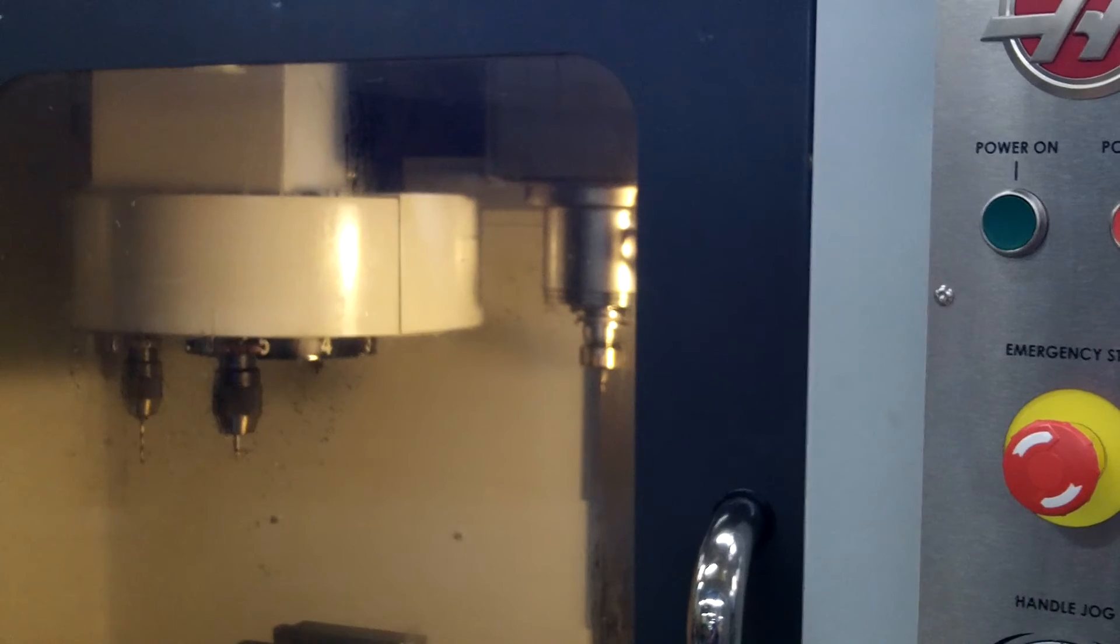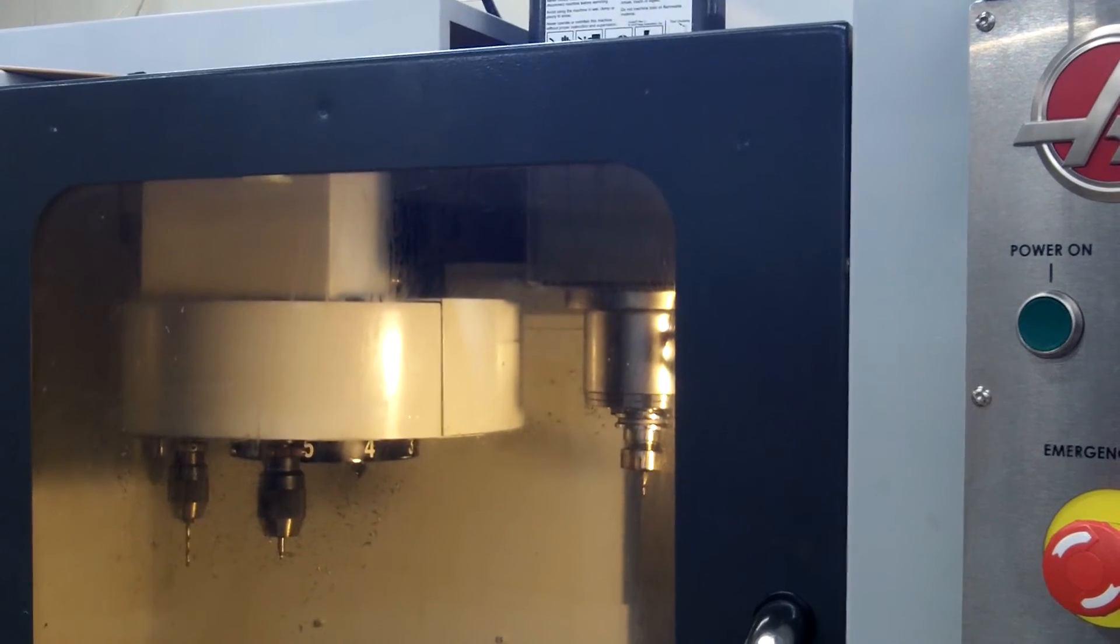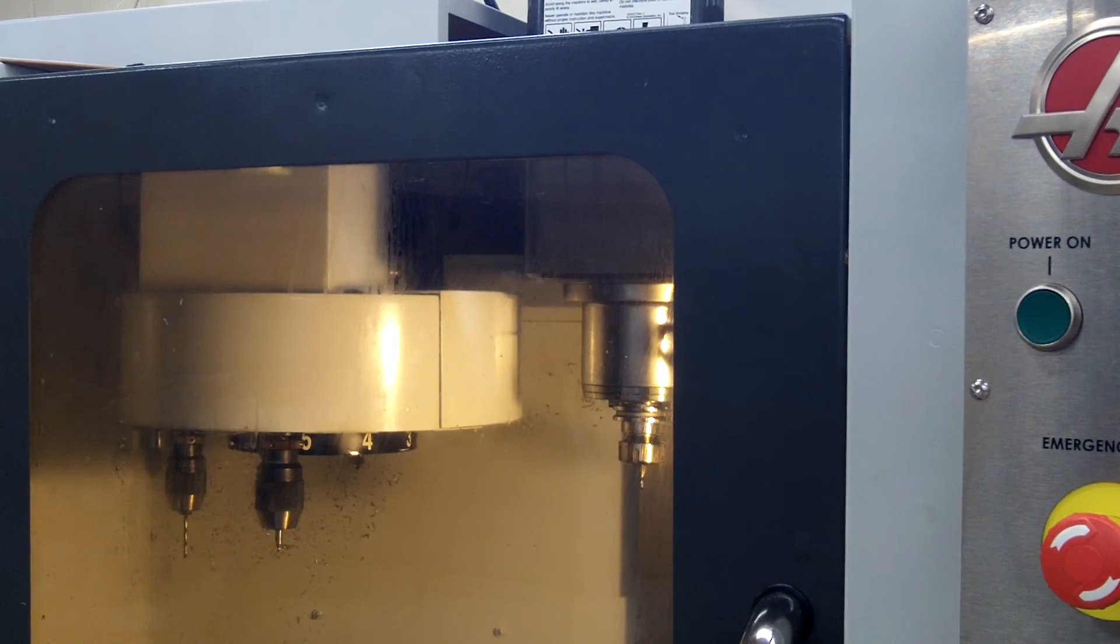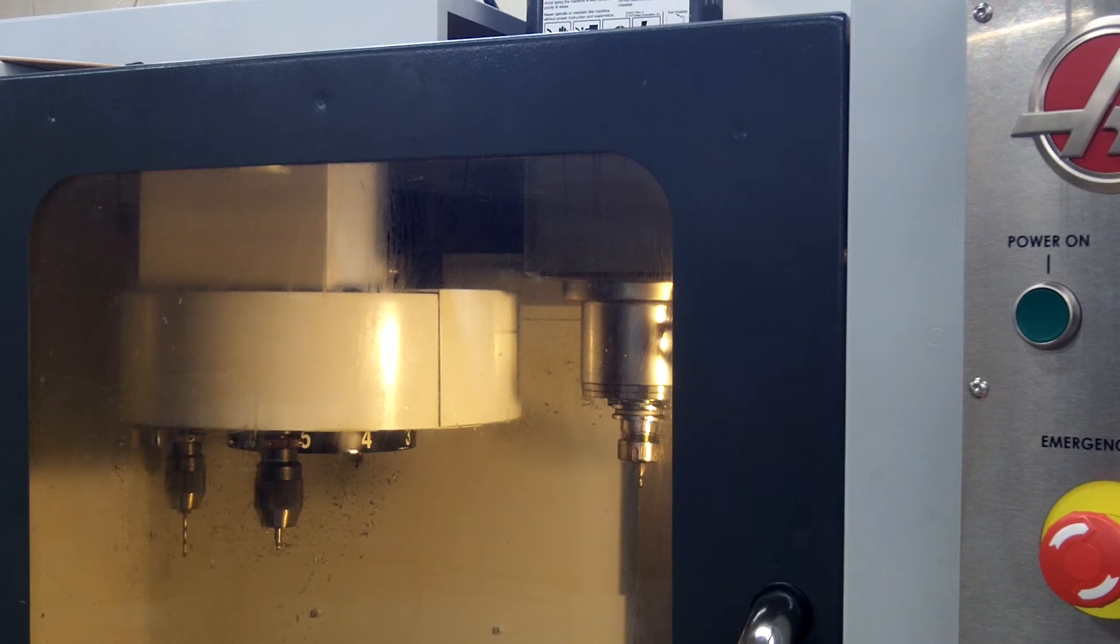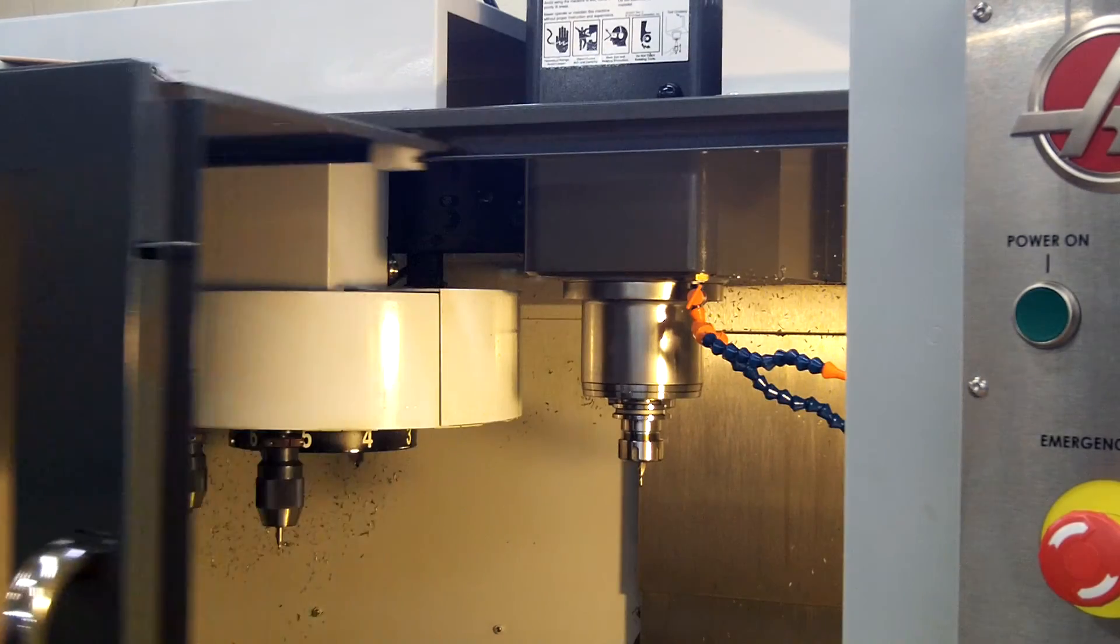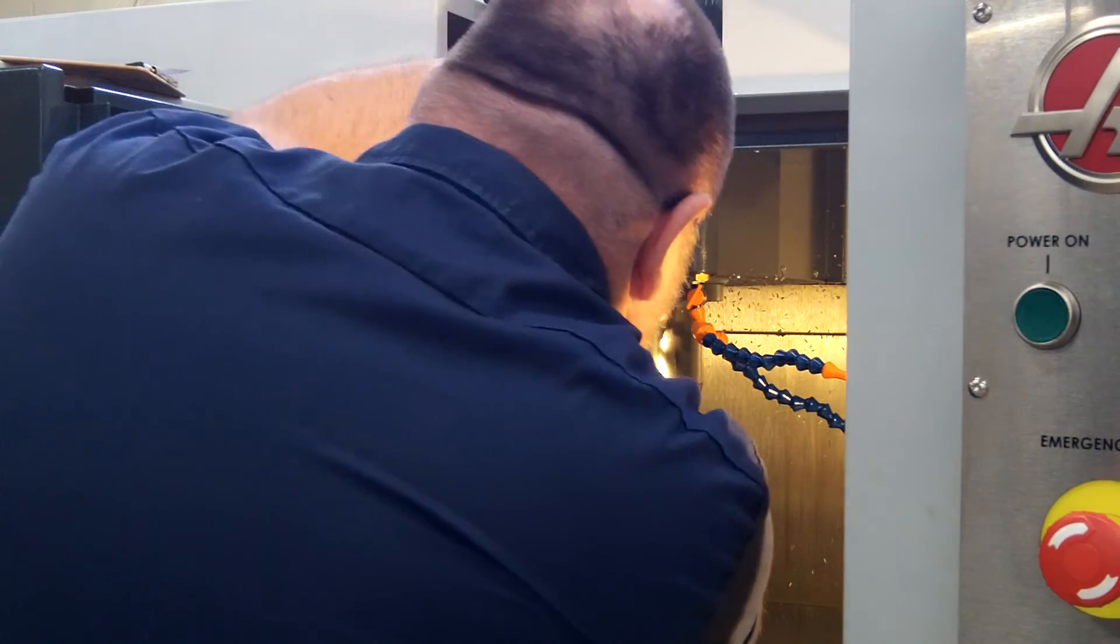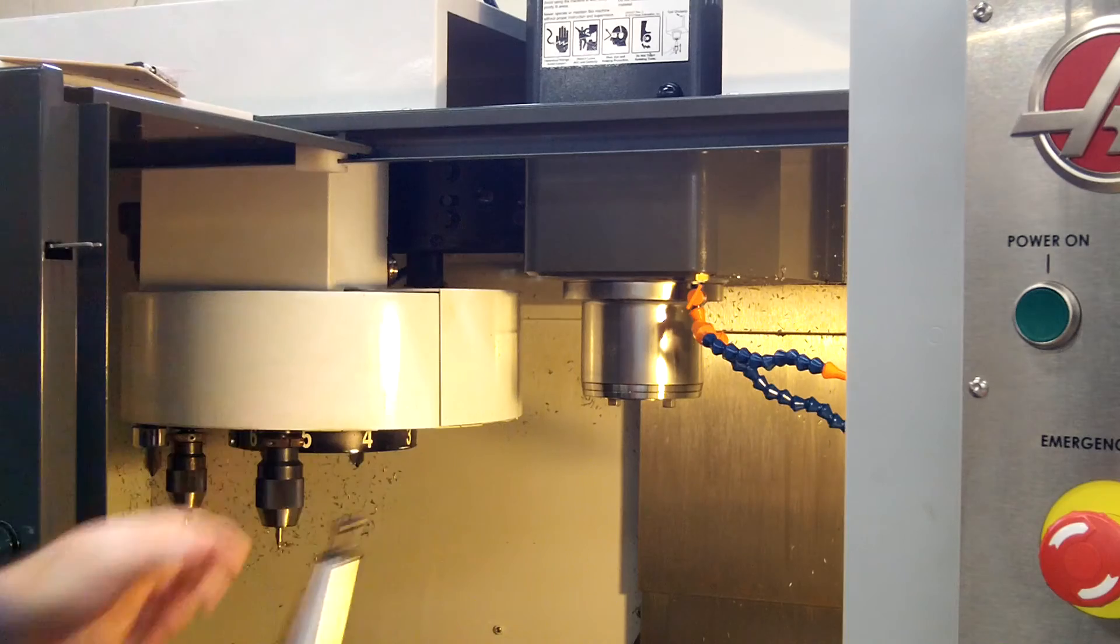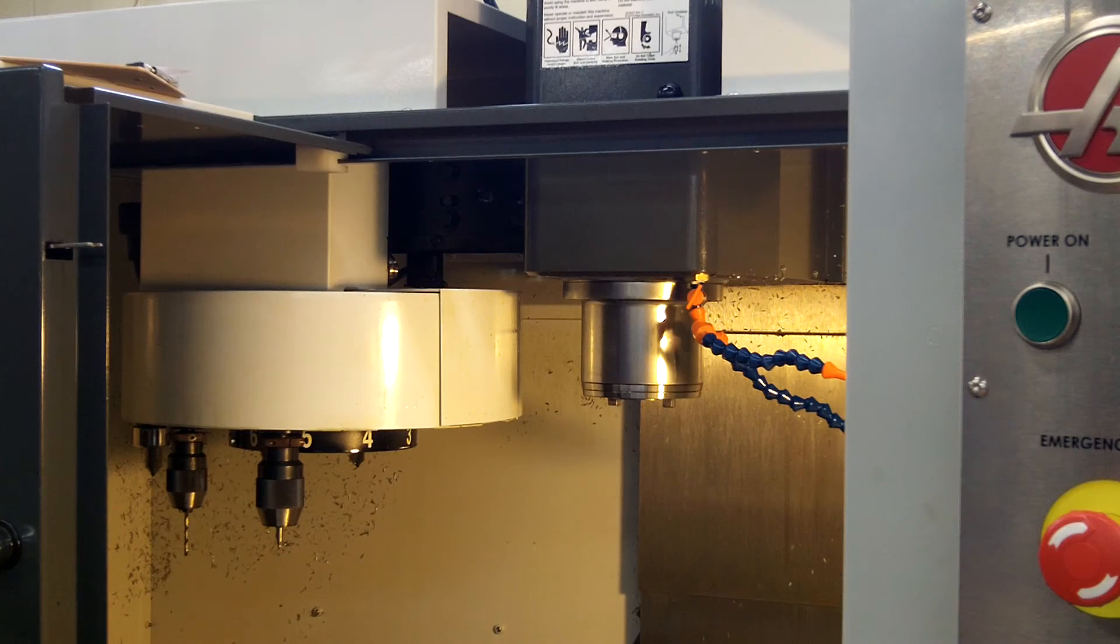Now, if we wanted to remove this tool as well, we would do the same thing as we did for the other tool. We will open the door, hold the tool, and press the tool release button. That is how you remove tools from the spindle.